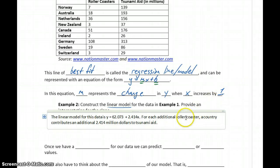So again, the slope tells us that if we increase our x variable, which is roller coasters, by one, it tells us how much that y variable should increase by. So for every one additional roller coaster, tsunami aid should increase by about 2.4 million.